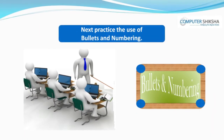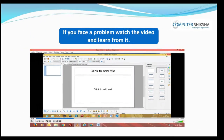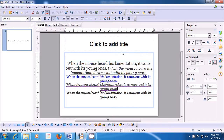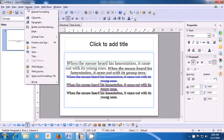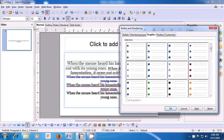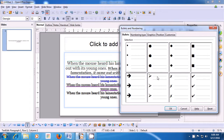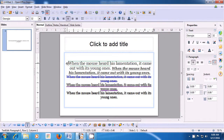Next, practice the use of bullets and numbering. If you face a problem, watch the video and learn from it. Let us now practice applying bullets and numbering. On the lines where you want to apply bullets and numbering, bring your cursor to the beginning of that line, click there, then take your pointer to the Format option in the menu bar, click there, and click on the Bullets and Numbering submenu. Since you have to apply bullets, click on the Bullets option — you see many types and styles of bullets available. Click on the one you like and click OK. The bullet gets applied in front of the line where you had placed the cursor.